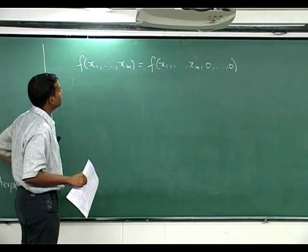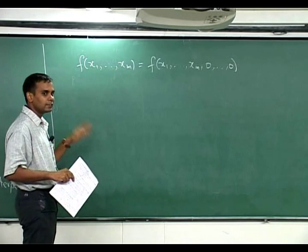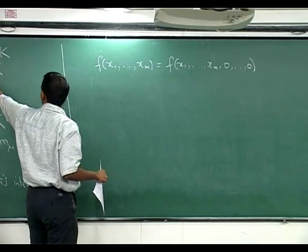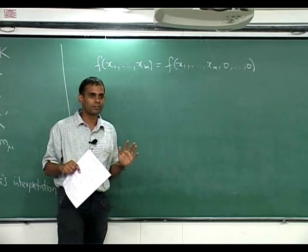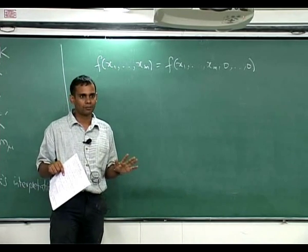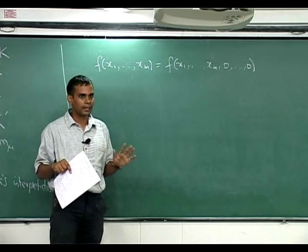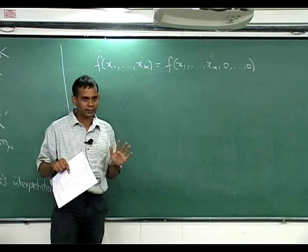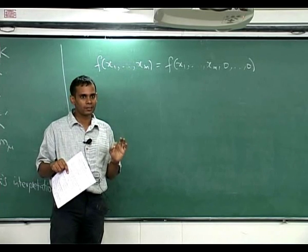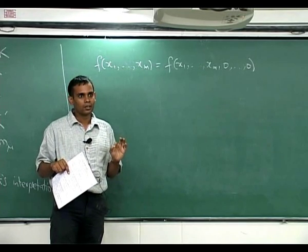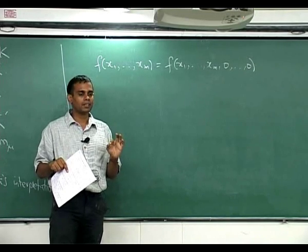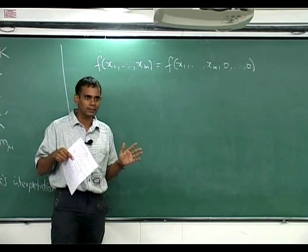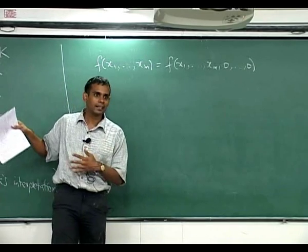If for example you are working with partitions of n and you take at least n variables, then everything is fine. The m_lambdas where lambda ranges over partitions of n will still form a basis of the symmetric functions in n variables. If you take partitions of n, m_lambda where lambda is a partition of n will still form a basis of symmetric functions of degree n in n variables, or if you take more than n variables that will still work. So if you take more variables than the degree of your partitions then all these arguments will work.